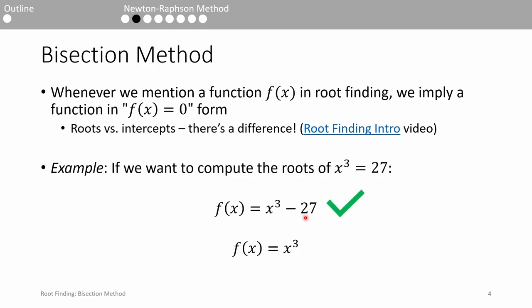In this case, f(x) = x³ - 27, not x³. See the root finding introduction video for more details.